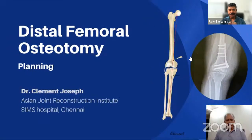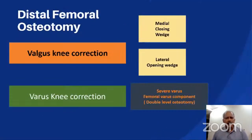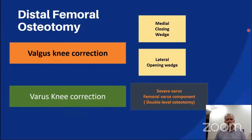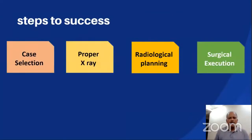Warm greetings to everyone, and thanks to SKI for organizing this meet. I'm going to be talking on how to plan for distal femoral osteotomy. Osteotomies in distal femur are carried out primarily to correct a valgus knee, in which the deformity almost always occurs in the femur due to lateral condylar hypoplasia. A commoner medial closing wedge osteotomy, and also a lateral opening wedge osteotomies, are done for the valgus knee correction.